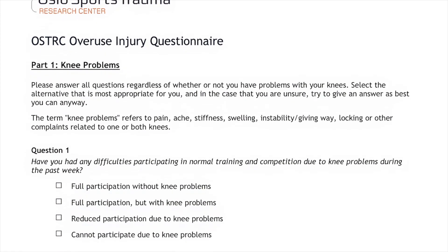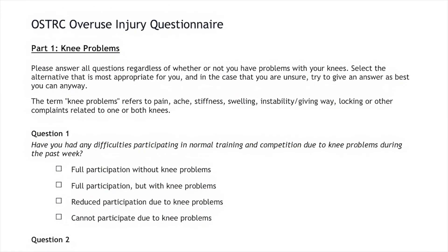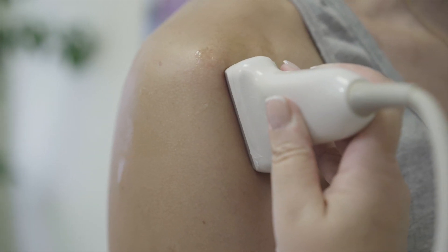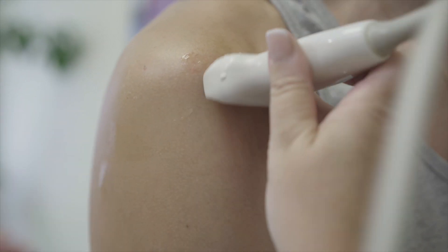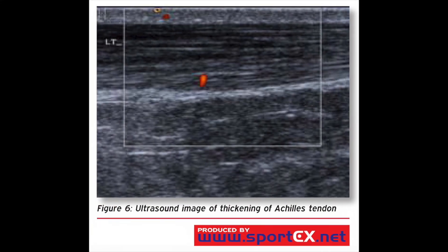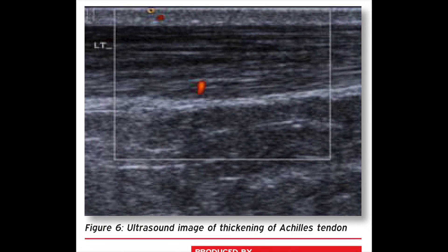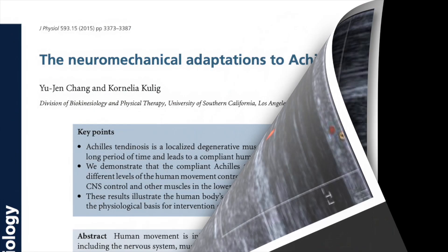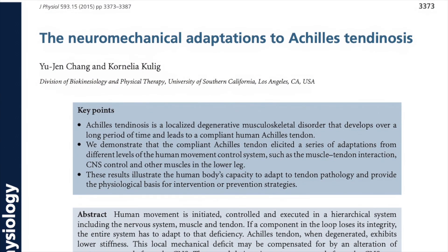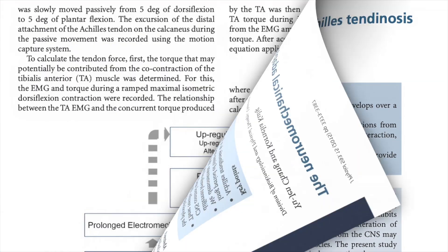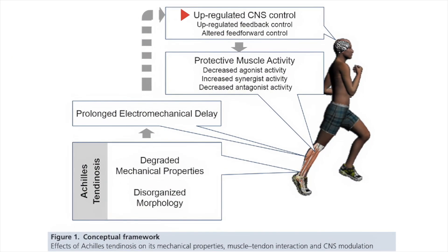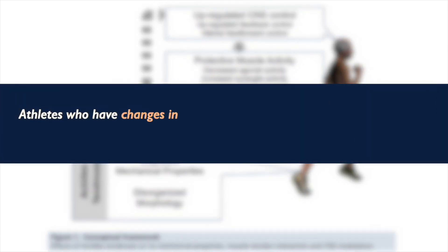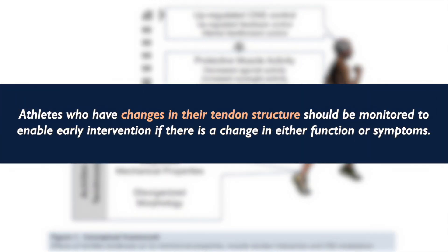This is why screening is so important, because early symptoms are often considered benign in the athletic population. The Oslo Sports Trauma Research Center Overuse Injury Questionnaire can be a useful way to detect early symptoms and their progression. Ultrasonography can be used to detect alterations in tendon properties that are risk factors for developing symptoms. Alterations in tendon properties without clinical symptoms can also result in altered central nervous system control and adapted muscle activation, so close monitoring of athletes with changes in tendon structure is recommended to enable early intervention if there is a change in either function, symptoms, or both.